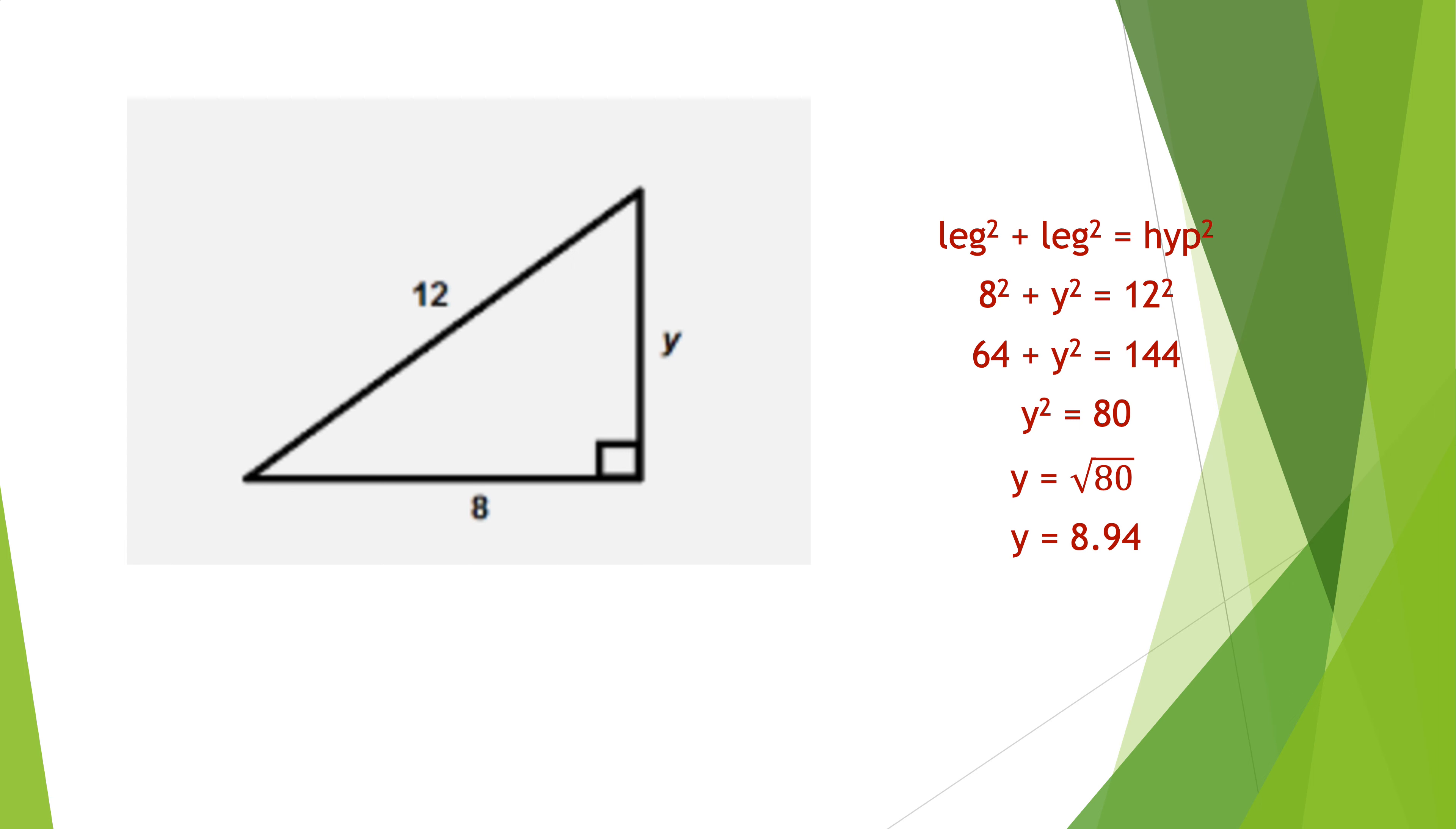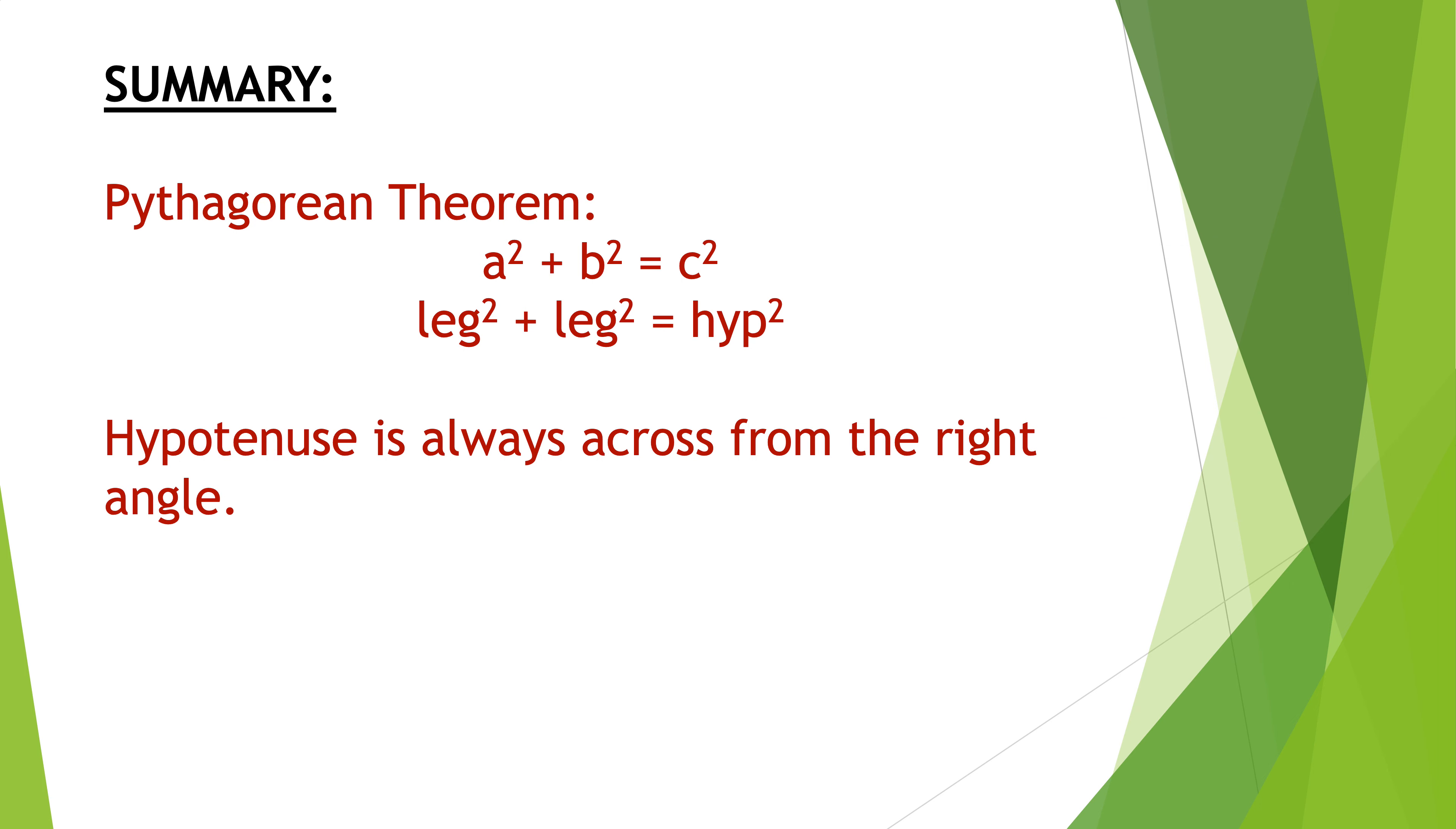So a little summary of the Pythagorean theorem work. The Pythagorean theorem says a squared plus b squared is c squared, but you must always remember c is the hypotenuse, or leg squared plus leg squared is the hypotenuse squared. The hypotenuse is always across from the right angle. You don't have to memorize Pythagorean triples, but if you do, it saves you a little bit of time. All right, have a great one. Hasta la bye-bye.